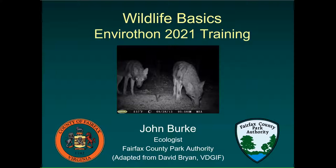This is my first year with Envirothon. My name is John Burke — I'm the branch manager for the Natural Resources Branch for Fairfax County Park Authority. My background is primarily in aquatic ecology, but I've also done a lot with ecotoxicology of amphibians and reptiles. We're going to be covering wildlife today — basically an entire intro class condensed into one presentation.